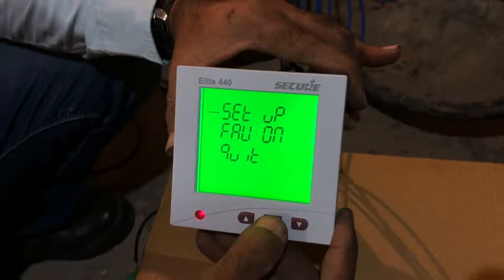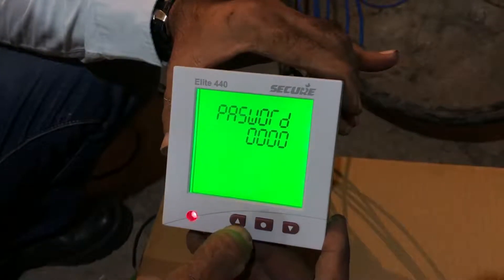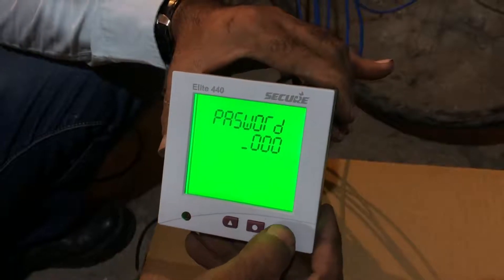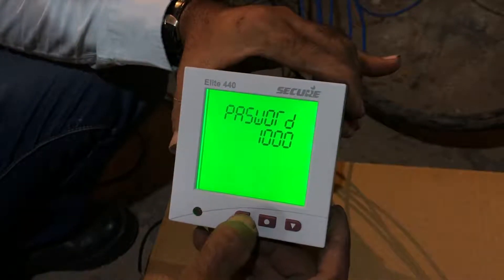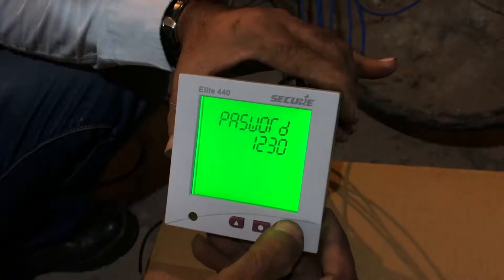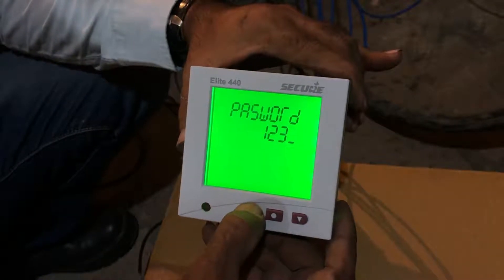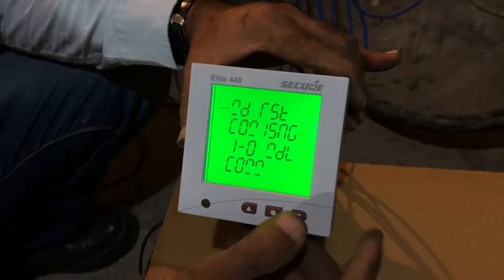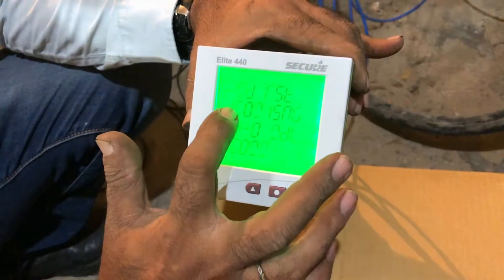Now we will see how to set up CT ratio in MFM. We'll put the password one two three four using the key functions described in the video, then we'll press enter. Now we will come onto the second part of the menu.